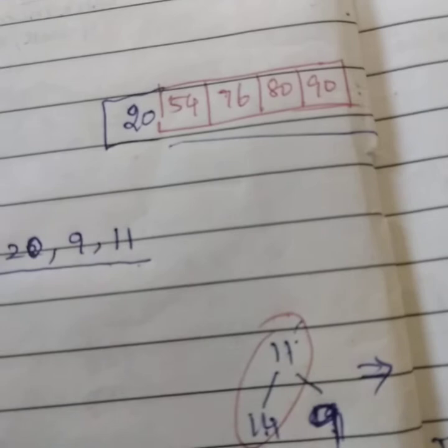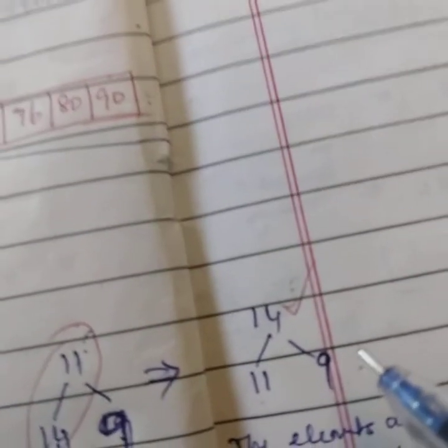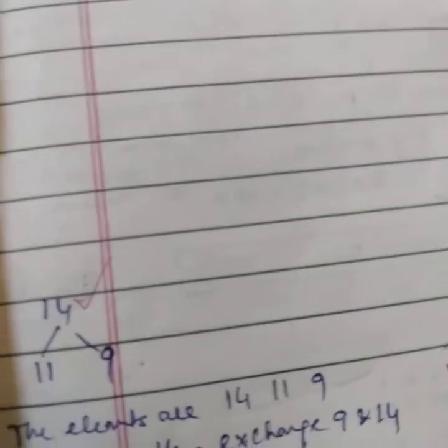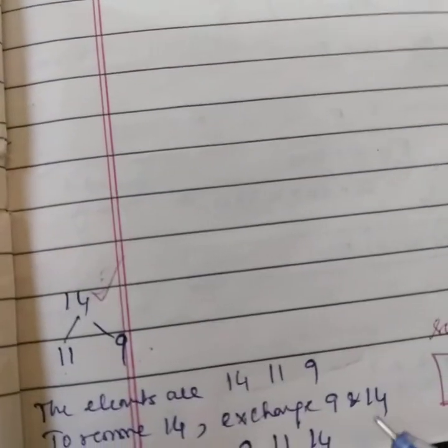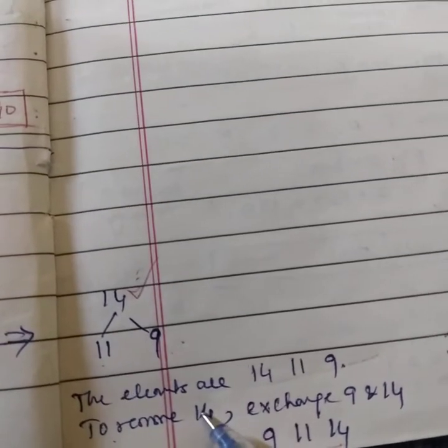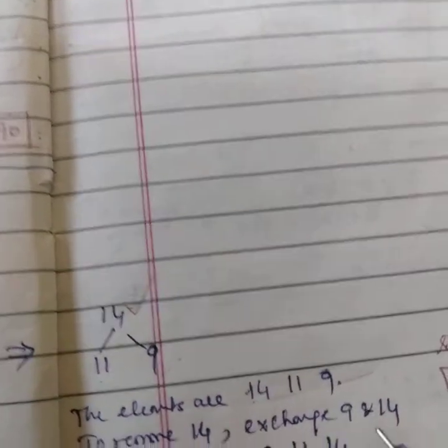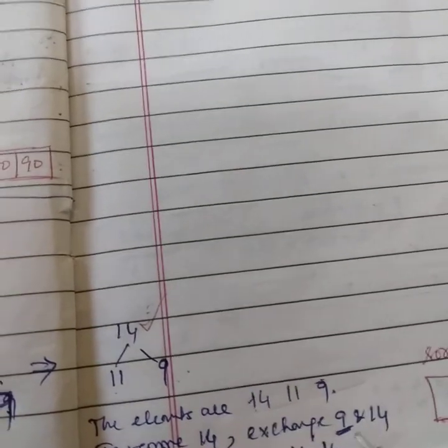So again, swap these two. Then the tree will become 14, 11, 9. That's all. So now we can write down the elements. The elements are 14, 11 and 9. So we need to remove 14. In order to remove 14, we need to exchange these two. So the minimum will be 9, then 11, then 14, 20, 54, 76, 80 and 90.